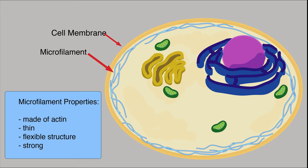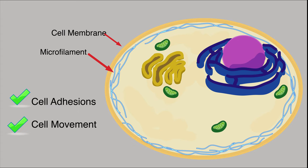In spite of being thin and flexible, they are also quite strong. They are often found just beneath the plasma membrane, where they strengthen the cell and give it shape. In addition to their well-known role in muscle contraction, actin-based filaments are also involved in forming cell adhesions and helping the cell to move.